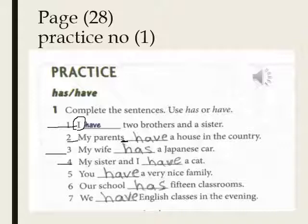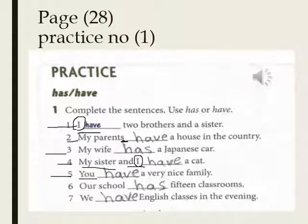Number three: 'My wife has a Japanese car.' My wife — مفرد — فأستخدم has. Number four: 'My sister and I have a cat.' أختي وأنا نمتلك — have، لأن عندي ضميرين my sister وI، وال-I تستخدم مع have. Number five: 'You have a very nice family.' You من الضمائر التي تستخدم معها have. Number six: 'Our school has 15 classrooms.' Our school — مدرستنا — مفرد — has. Number seven: 'We have English classes in the evening.' We — جمع — وتستخدم مع have.